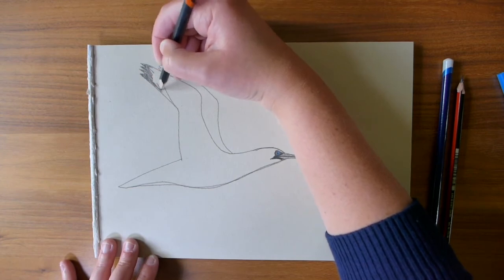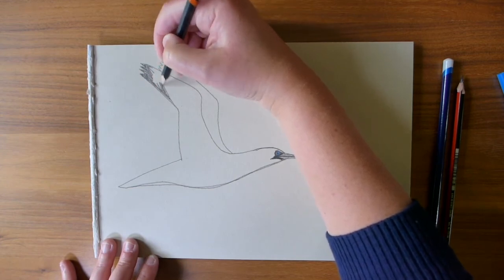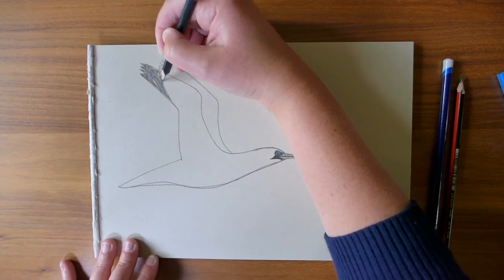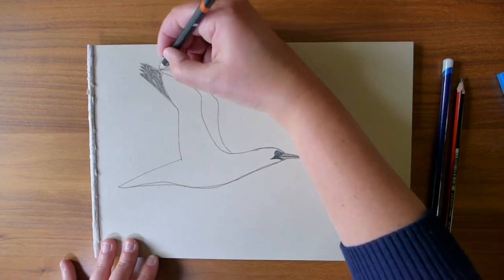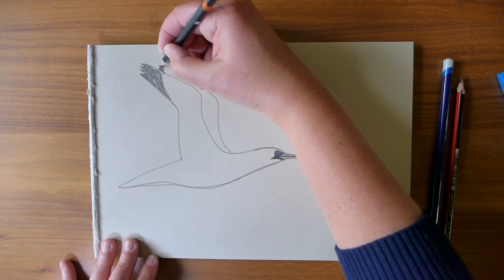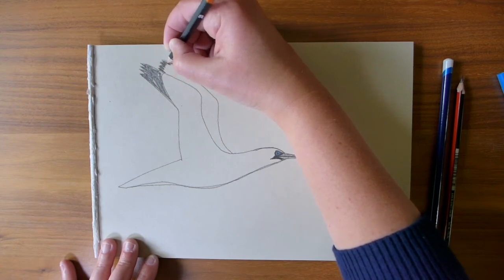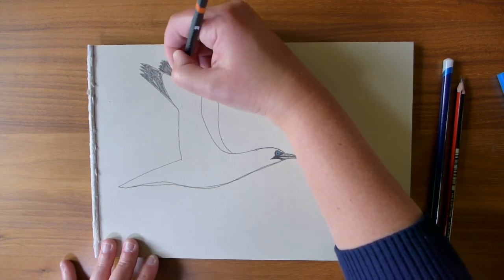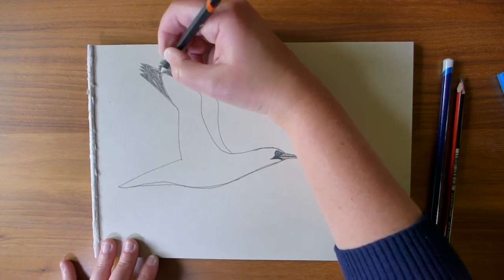When you see these birds out at sea from the coast they are so bright with black wing tips really striking and put in the other wing tip just like that and if I'm going too fast you know pause at any point so that you can catch up.